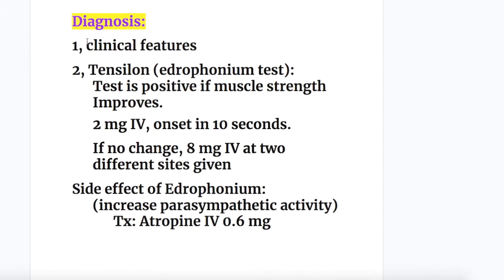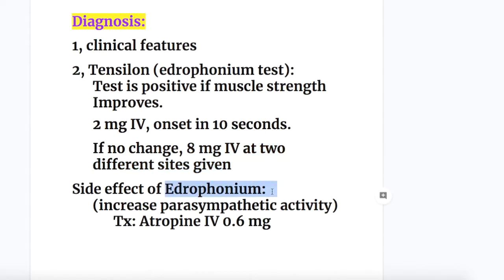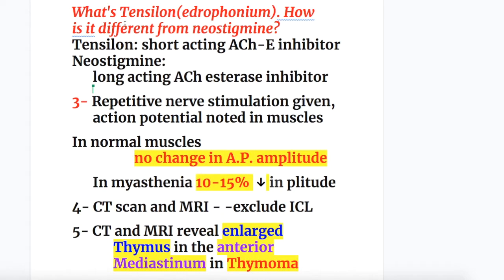Diagnosis of Myasthenia Gravis is made on clinical grounds and with the tensilon (edrophonium) test. The test is positive if muscle strength improves on administration of tensilon: 2 mg IV is given with onset in 10 seconds, and if no change occurs, 8 mg is given at two different sites. Side effects include increased parasympathetic activity such as bradycardia, treated with atropine IV 0.6 mg. Tensilon is a short-acting acetylcholinesterase inhibitor, whereas neostigmine is a long-acting acetylcholinesterase inhibitor.